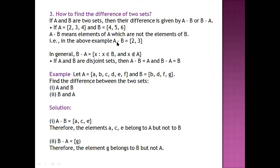So what will be A minus B? 2 is included in A but 2 is not in B. Similarly, 3 is included in A but 3 is not in B. So 2 and 3 will be our answer. Considering 4: 4 is in both A and B, so we will not take 4. Therefore, A minus B will be {2, 3}. Hope you are clear.